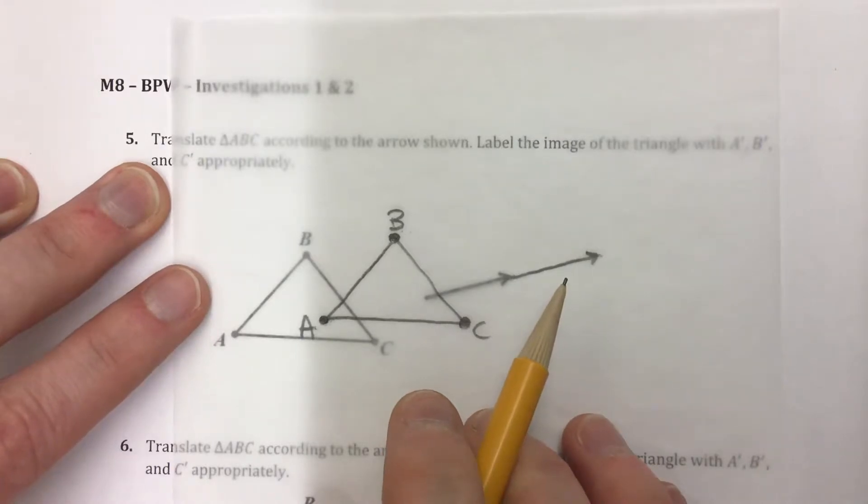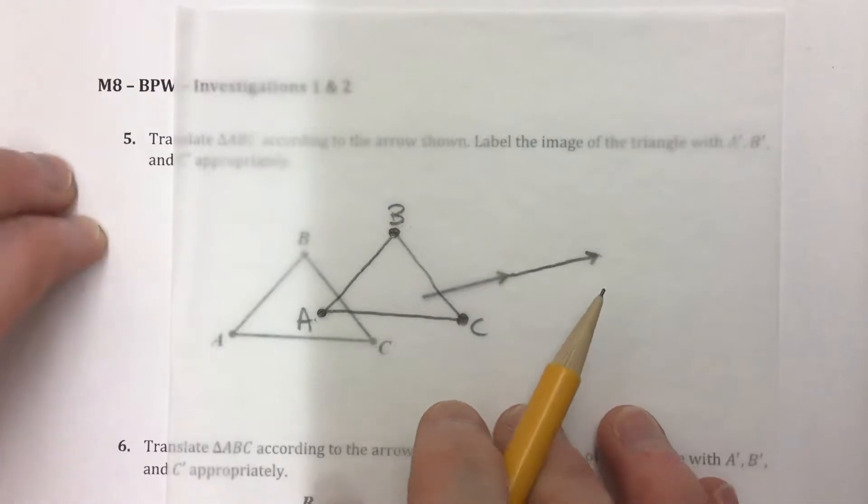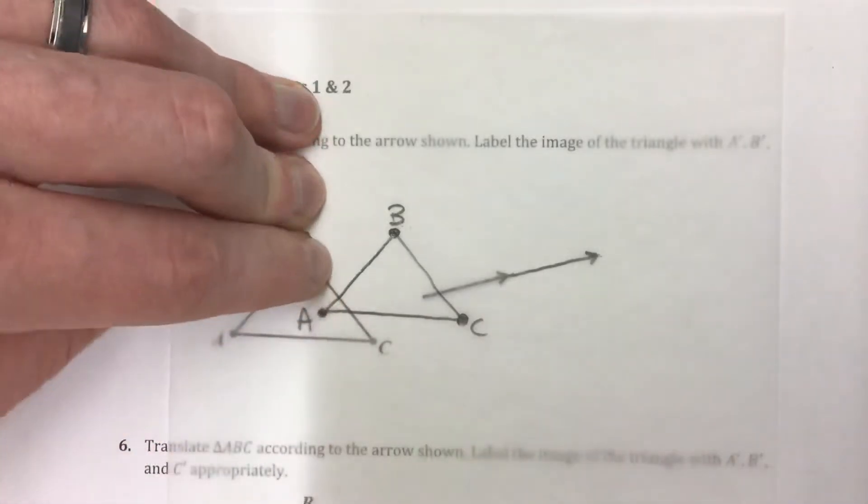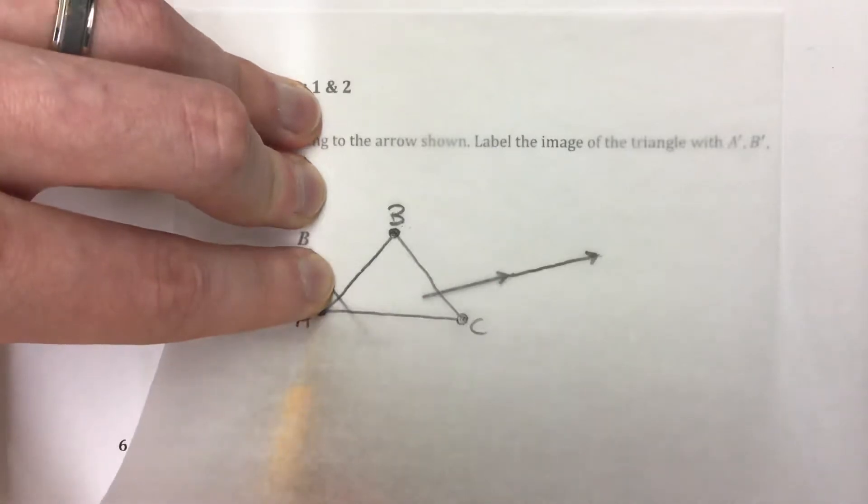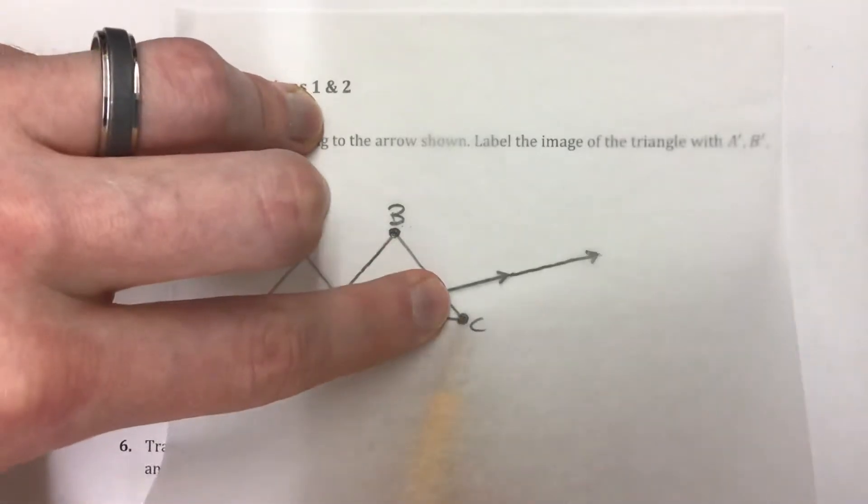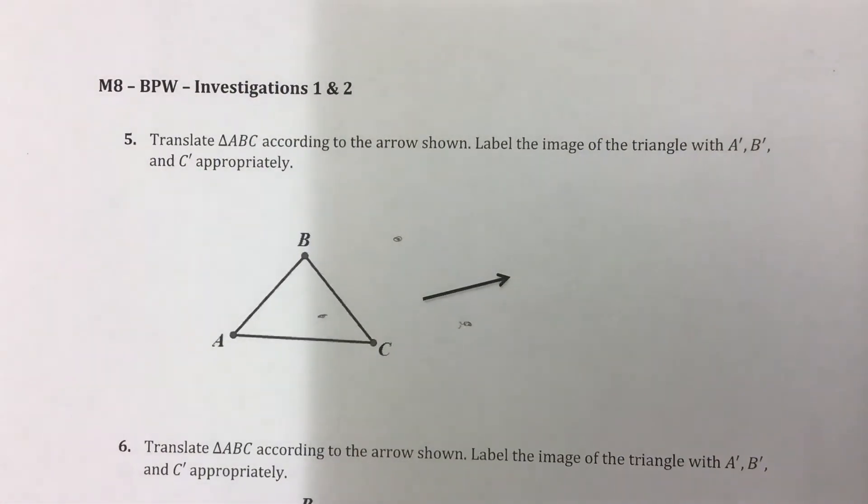I'm going to lift up the edge of my paper here. Make sure I did that right. Slide it like this. I'm going to lift up the edge of the patty paper and just put a little dot for each of those vertices of that triangle. So at A here I'm going to put a dot there at the new A, the new C, and the new B. You can use this way to make those points.